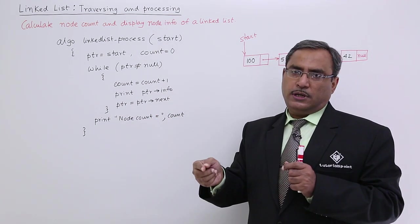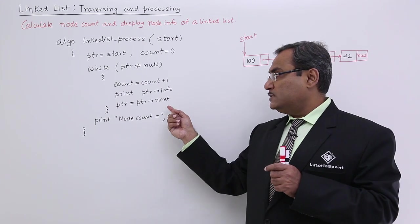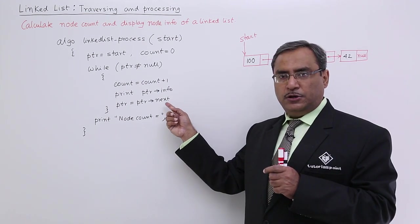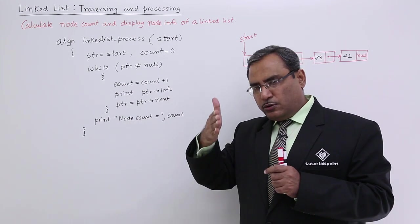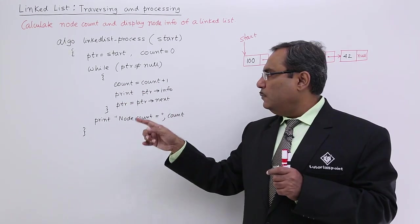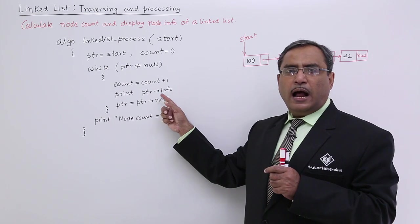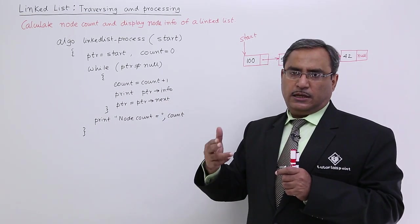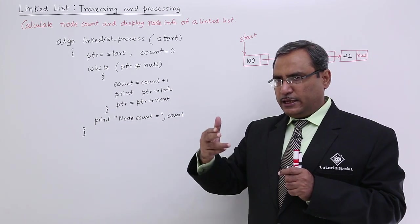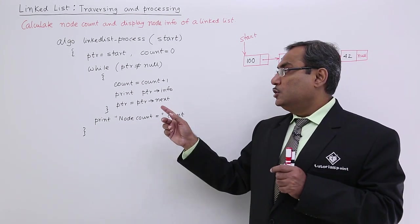It will go to the next node's address because the next field knows the address of the next node. So now in this way PTR will go on advancing and it will print the respective info. When PTR is going to the next, it's getting initialized with the next field's content.